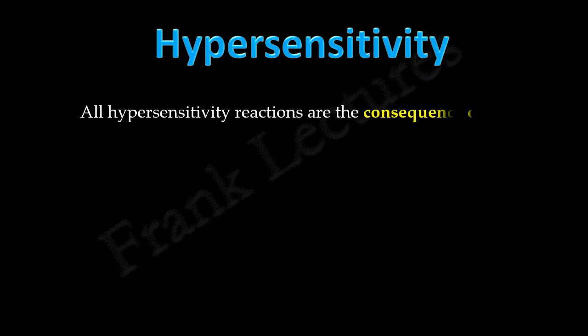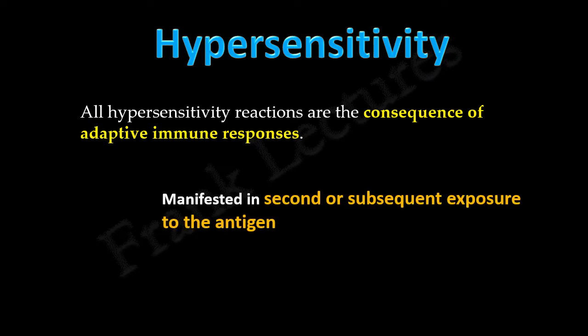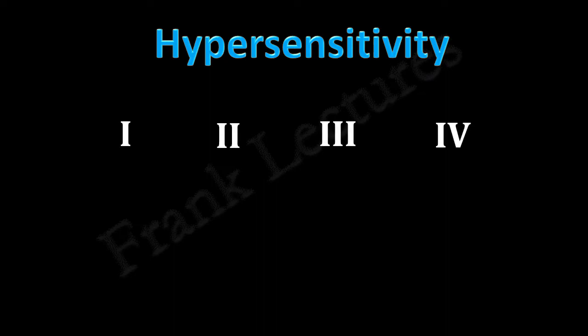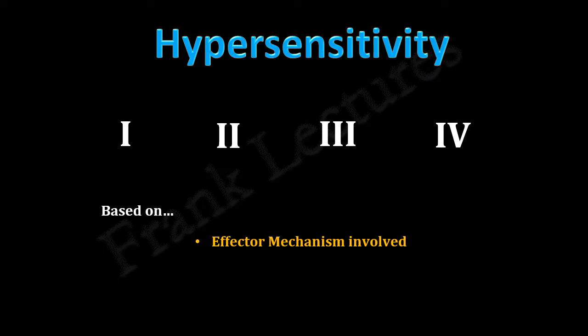All hypersensitivity reactions are the consequence of adaptive immune responses that result in tissue damage. These reactions are manifested when the individual gets a second or subsequent exposure to the antigen. Hypersensitivity reactions can be grouped into four types. This classification is based on the effector mechanism involved, or in other words, the components of immune response involved in the hypersensitivity reaction, and the time of onset — that is, how quickly the reaction develops.